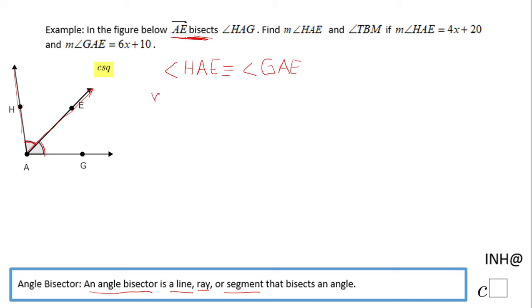Now I'm going to write the same statement using the measure. The measure of angle HAE equals the measure of angle GAE. These two statements represent the geometry of the problem, and now we're going to go to the algebra.